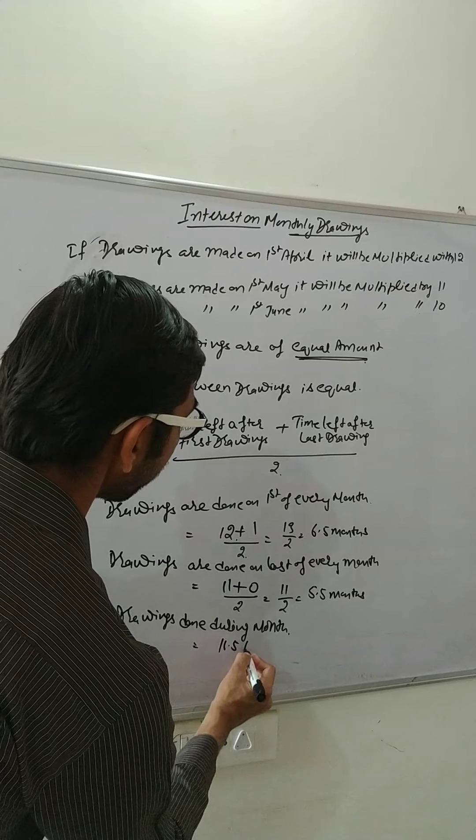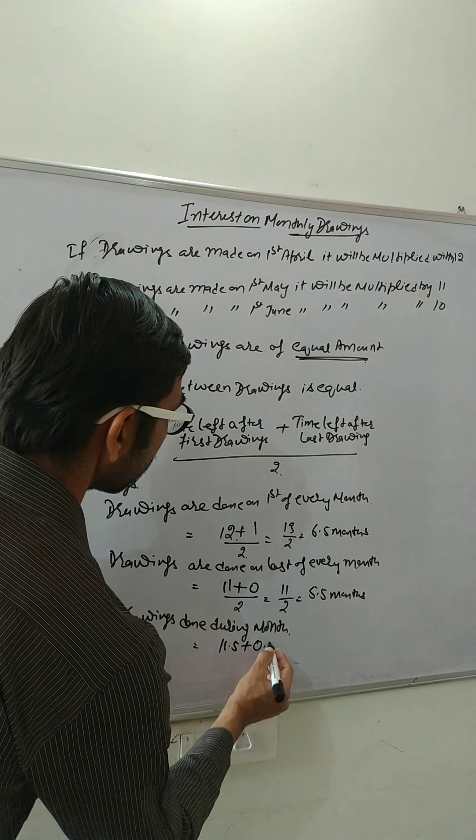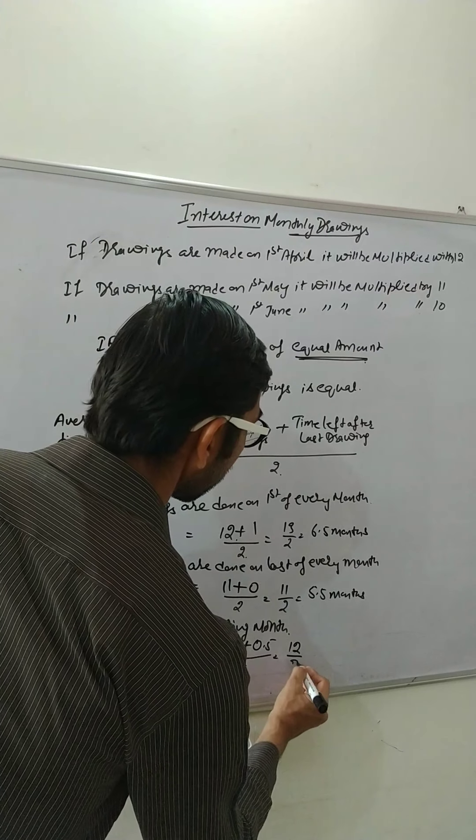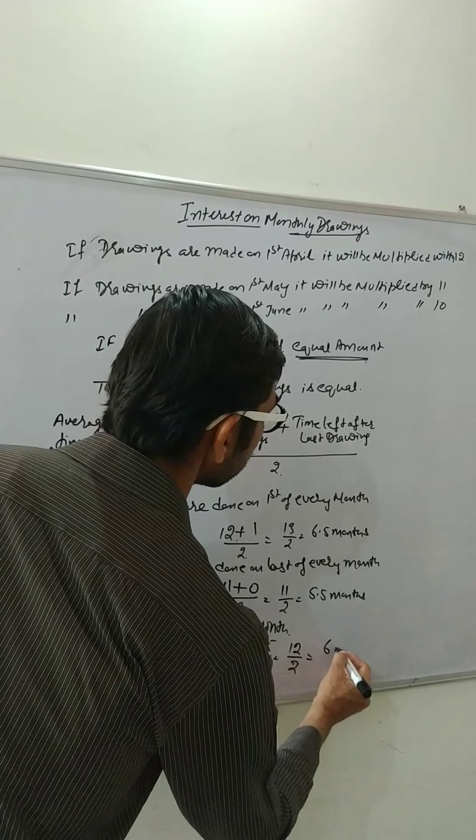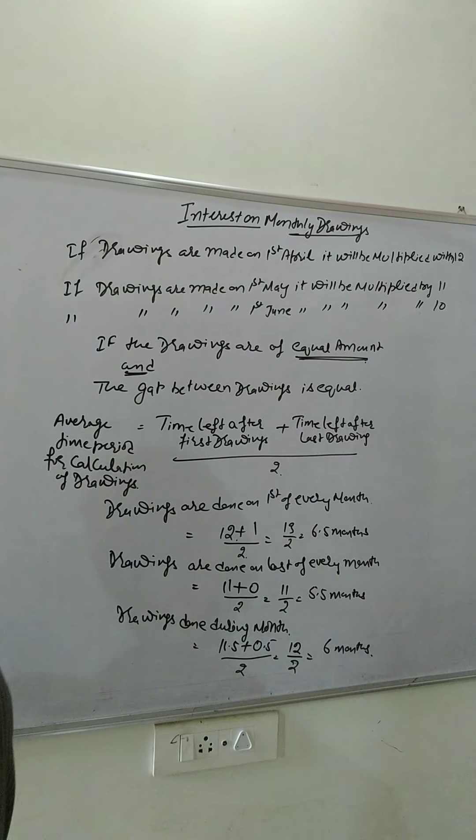After 15th January, and last drawing is done on 15th December. How many months left after that? Since books are closed on 31st December, half month. Divide by 2, that is 12 by 2. So that is how it is to be done.